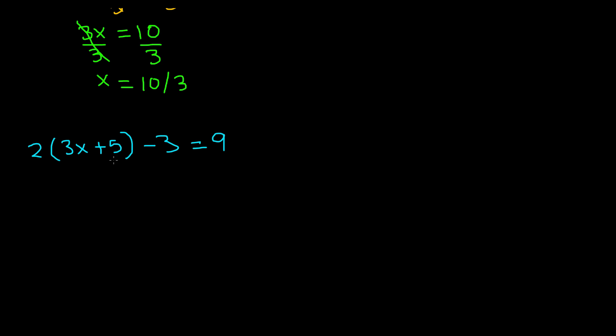In this case, we have the distributive property being applied to this, because we're going to have to distribute the 2 to 3x and positive 5. So if we go ahead and distribute it, that means we need to multiply it by 3x, and we need to multiply it by the 5. So we know that 2 times 3x is, we know 2 times 3 is 6, and then we bring down the x with it. So we get 6x, 2 times 5, positive 5 is going to be positive 10, minus 3 is equal to 9. Bring everything else down. So now we've simplified our equation.